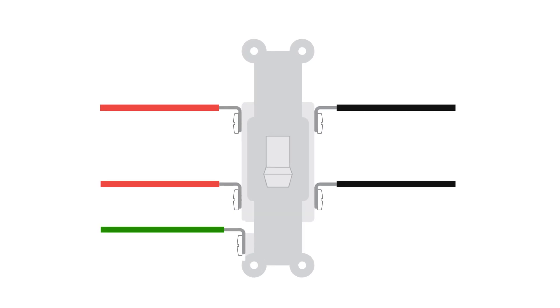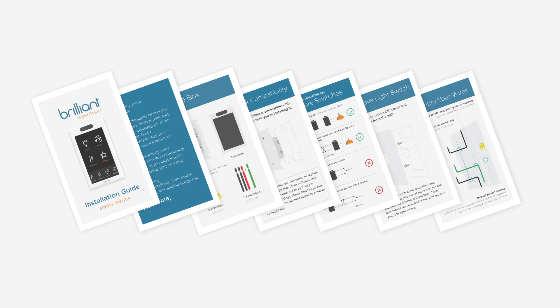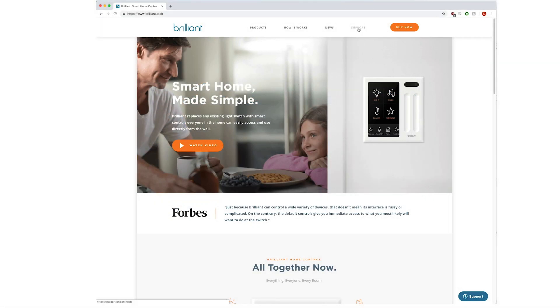A good way to tell if the switch is a four-way is if there are four wire terminals in addition to the ground terminal. If you face these scenarios, you can refer to the diagrams found in your installation guide or visit the support section of the Brilliant website.